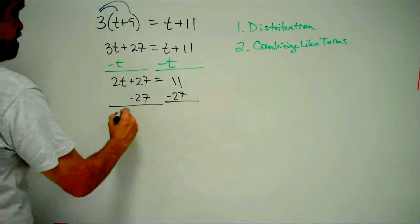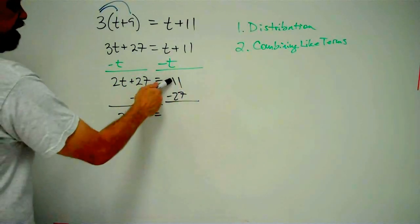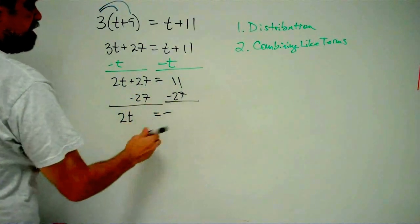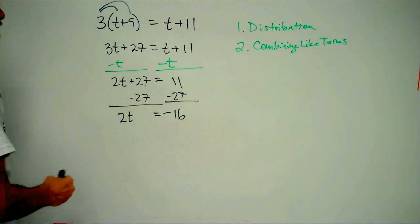2t plus 27 minus 27 gives us 2t. 11 minus 27, little number minus big number, gives us negative number. And 27 minus 11 is 16. So 2 times t is negative 16.